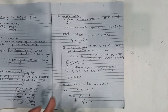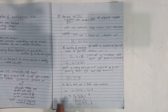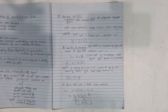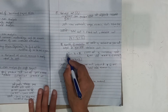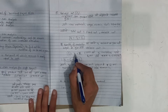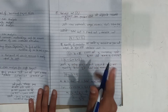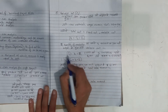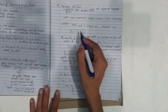Total cost equals fixed cost plus variable cost. For a given quantity of production Q, variable cost per unit multiplied by quantity gives total variable cost. So total cost equals fixed cost plus variable cost per unit multiplied by quantity. This is the formula: Total Cost = CF + (BC × Q).